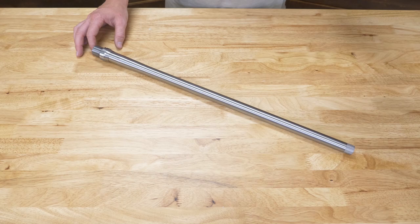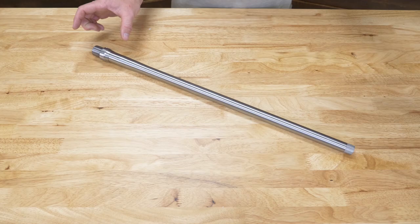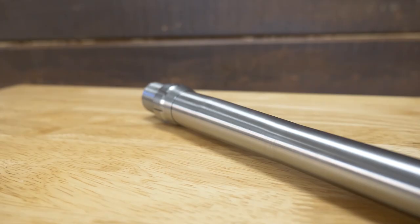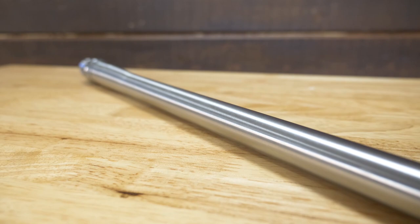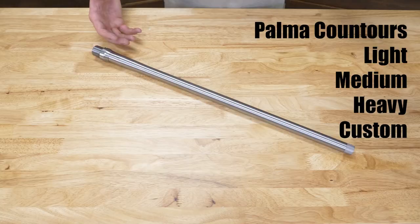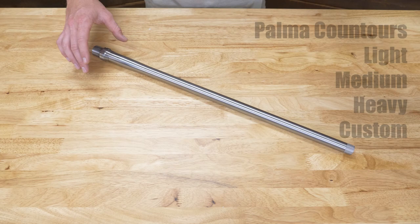A Palma contour is composed of a straight shank and a 2 taper design. The straight shank section leads into the first taper with a transition to a second taper, typically much longer than the first taper length. Options include light Palma, medium Palma, and heavy Palma, as well as custom options where you can actually input your own specifications.